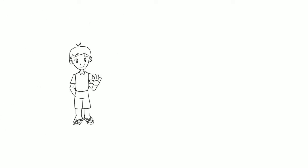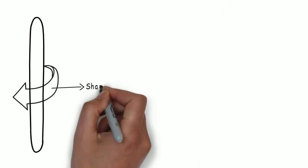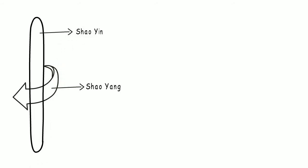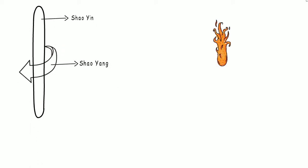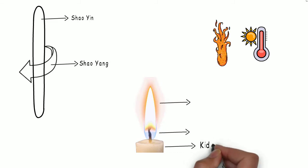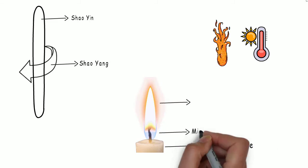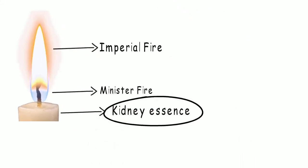Hi, today I will talk briefly about Shao Yin. While Shao Yang is the pivot, Shao Yin is the axis. Shao Yin's nature is related to fire and heat. The kidney-heart axis generates the minister fire. It is the primary root of all physiological functions in the body and very important for the heart's imperial fire. Shao Yin is related to constitutional strength.